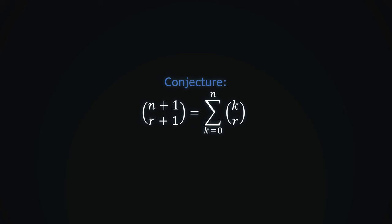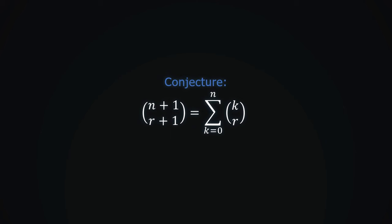Symbolically we can write it like this. The sum of the coefficients in the diagonal r up to the row n is equal to n plus 1 choose r plus 1. To illustrate the proof, let r be equal to 3.